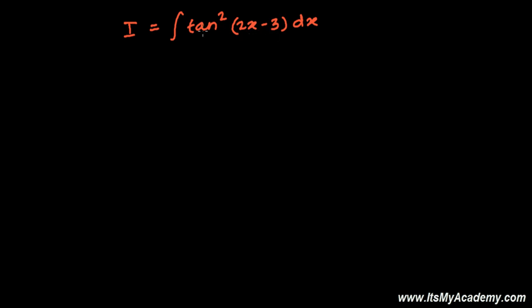Neither the derivative of tan square 2x minus 3 is present here, neither the derivative of tan 2x minus 3 is present here. It means we have to work out here a little to convert into the format of t, to transform into the new functions format.